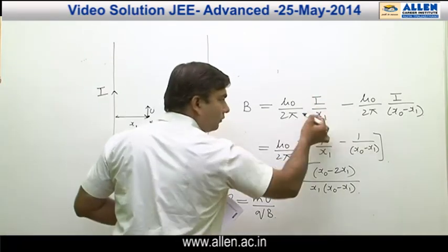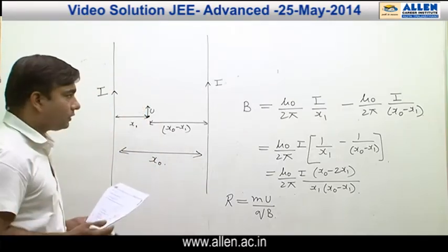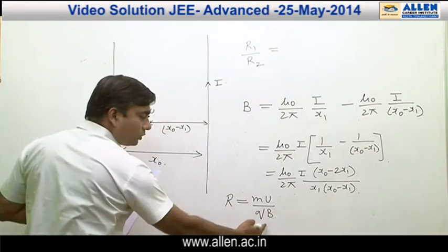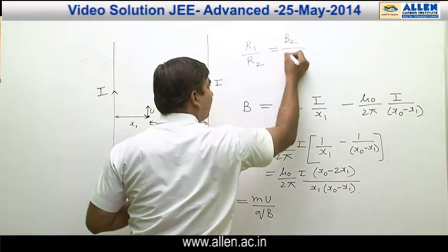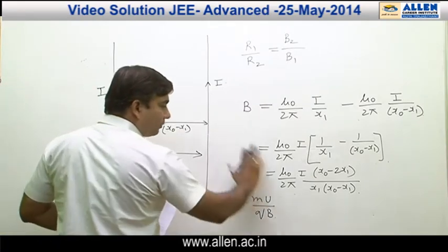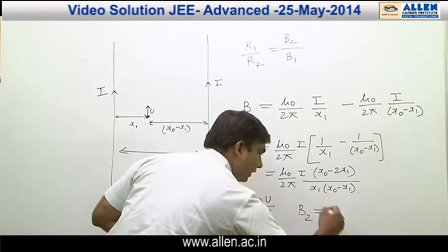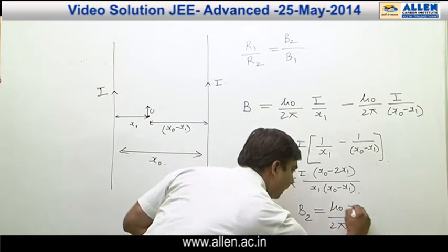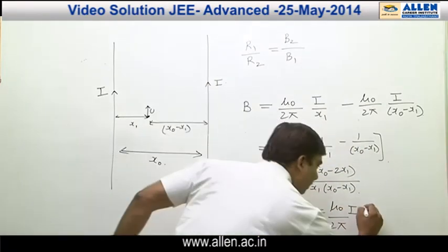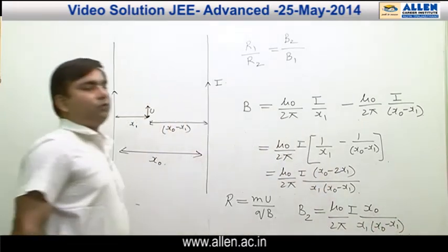So the magnetic field in the second case is the addition of the two terms. If the radius of curvature is r1 for the first case and r2 for the second case, then r1 by r2 equals B2 upon B1, since r is proportional to 1 by B. For the second case, B2 equals mu naught upon 2 pi times i, and x naught minus x1 plus x1 gives x naught in the numerator, so B2 equals mu naught upon 2 pi times i times x naught upon x1 times (x naught minus x1).